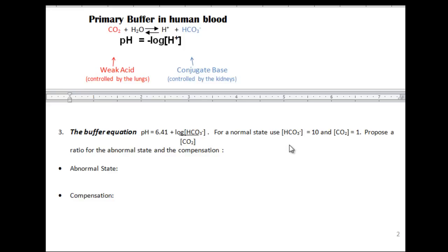For a normal state of bicarb, use 10, and for the normal state of CO2, use 1. Because if you enter 10 over 1 into this fraction, take the log of 10, you'll get 1, and 1 plus 6.41 will be 7.41, which is a healthy pH.